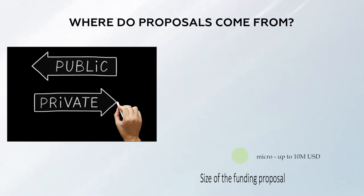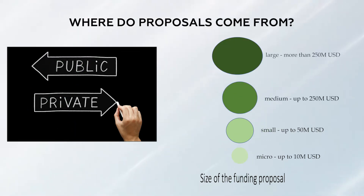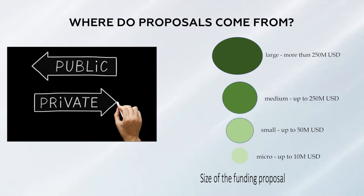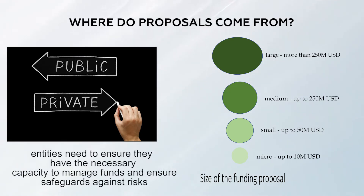For micro funding proposals, the ceiling is up to 10 million US dollars. Small is between 10 million and 50 million US dollars. Medium is between 50 million and 250 million US dollars, and large is 250 million dollars and above. Entities are accredited according to their capacity for disbursing and managing funds, so an entity accredited only for micro projects can only submit proposals at that micro scale. As the scale increases, fiduciary standards must be higher to manage the associated funds and risks.